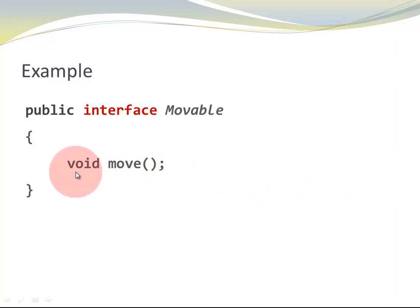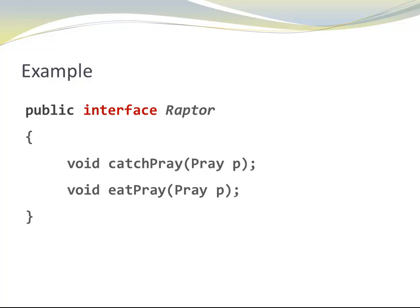Notice, no mentioning of abstract, no mentioning of public. This is implied. Another example: public interface Raptor. This time I chose a noun for my name. Raptor is a bird of prey. It can do two things: it can catch prey and it can eat prey. In this case, I decided that the prey should be passed as an argument, so we know which prey is going to be caught and which prey is going to be eaten. Notice the semicolon at the end. Those are abstract methods that specify the signature, but there is no implementation in interfaces.